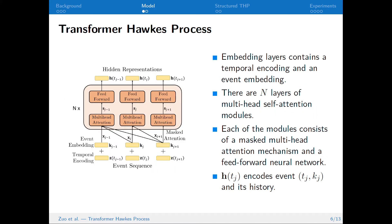The events are first passed through a temporal encoding layer and an event embedding layer. Then the embeddings are passed through N layers of multi-head self-attention modules, where each of the modules has a masked multi-head attention mechanism and a feed-forward neural network. We obtain the hidden representations of all the events.